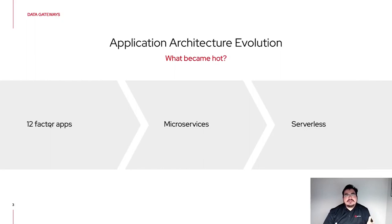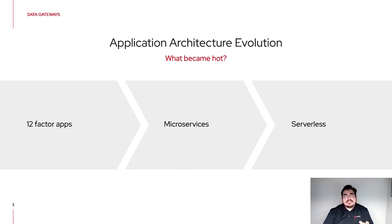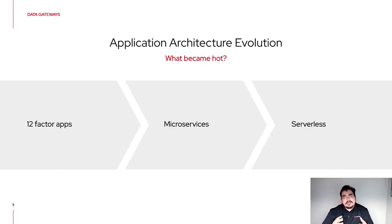We were talking about the evolution that applications have been going through since we moved away from the traditional three-layer architecture — one single application, one single deployment, running on the same infrastructure. First, we started with 12-factor applications: we began to decouple certain characteristics, moving away from hard-coded configurations to externalized injection, as well as keeping different source repositories to handle our applications in different ways.